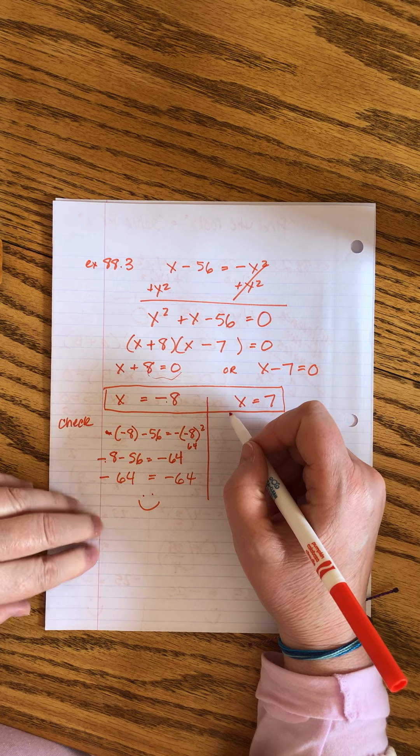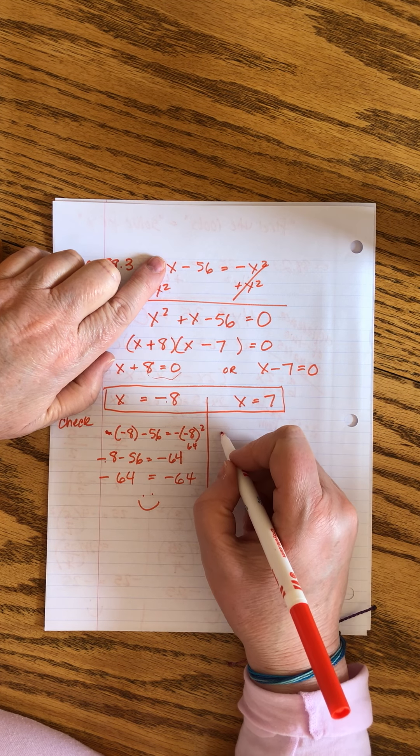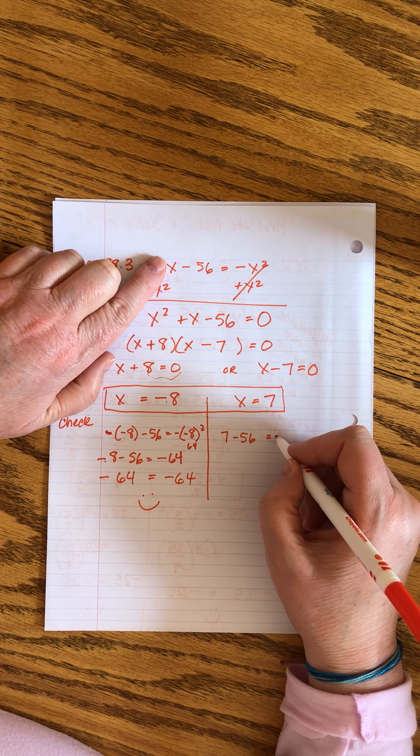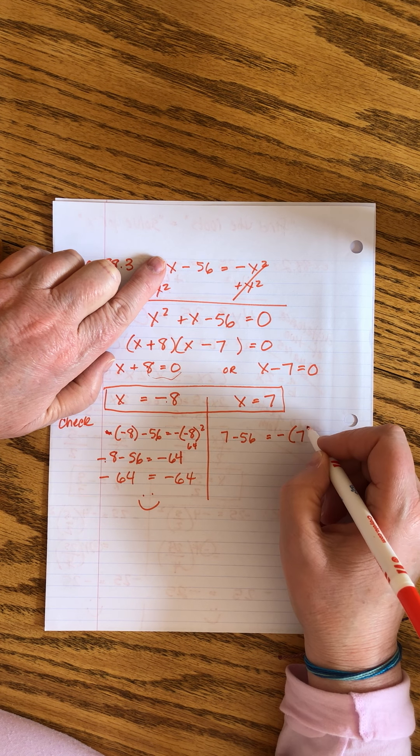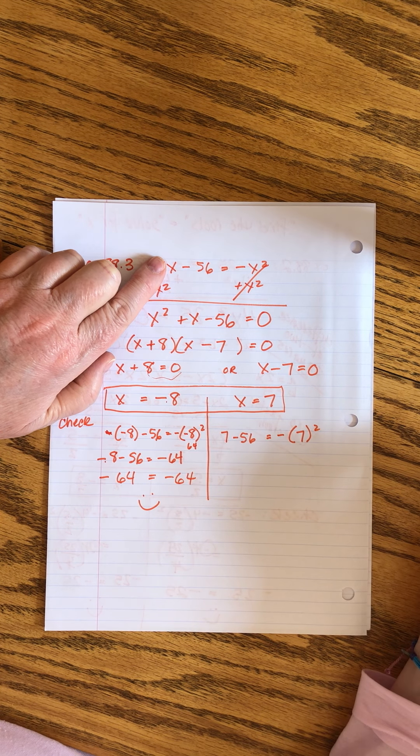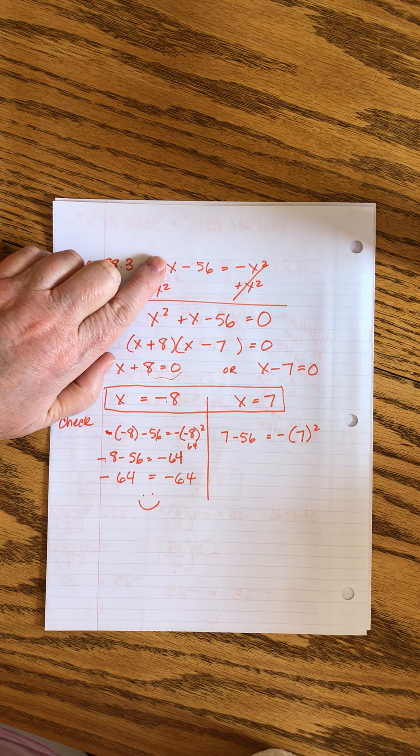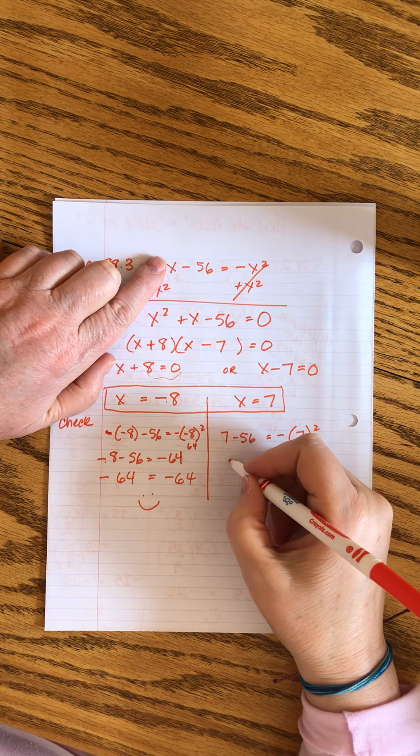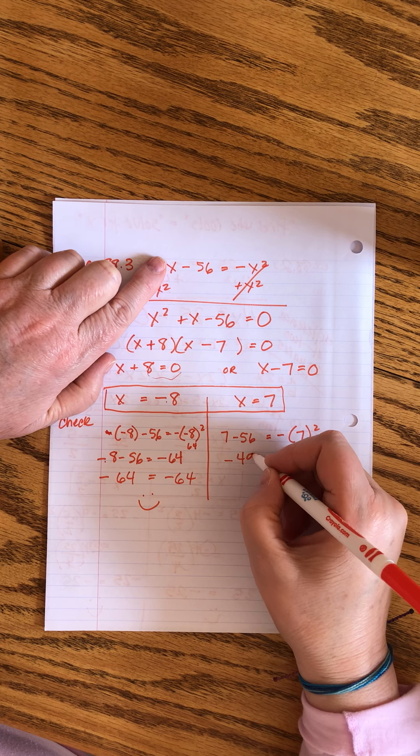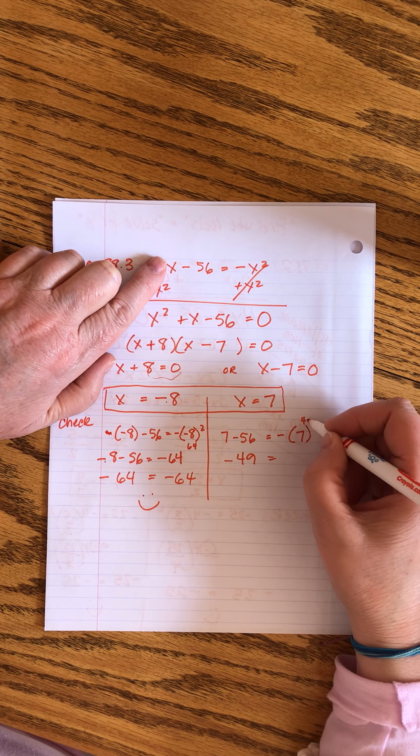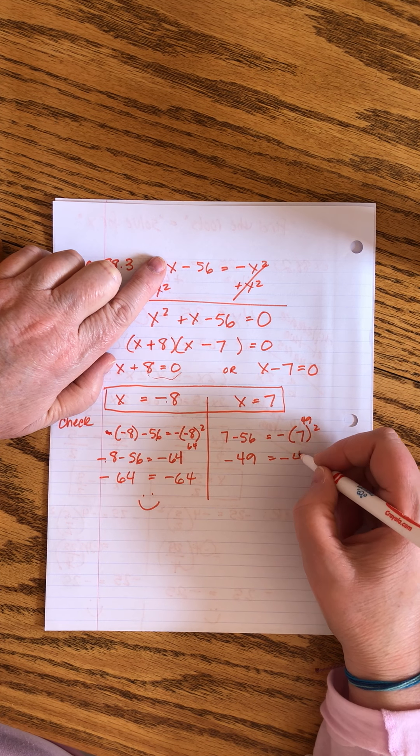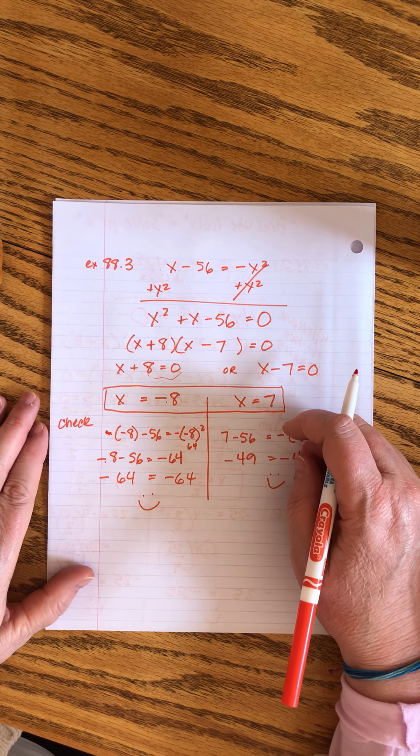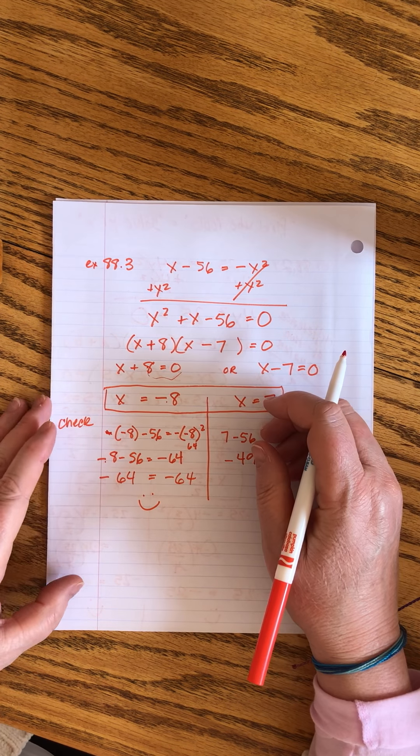And then we'll do the same thing over here. We have 7 minus 56 equals minus 7 squared. This is positive 7 minus 56, so this would be negative 49. This is 49, negative 49. Both of those solutions check out as well.